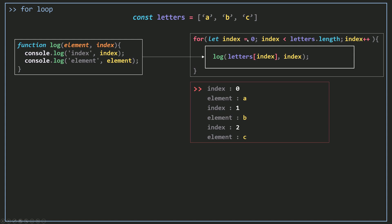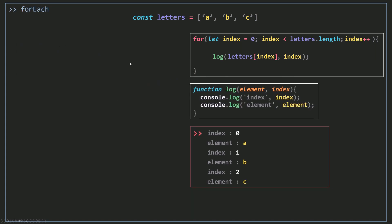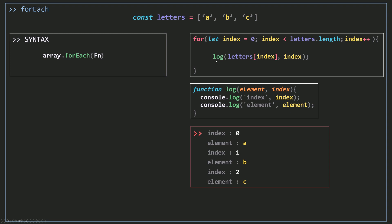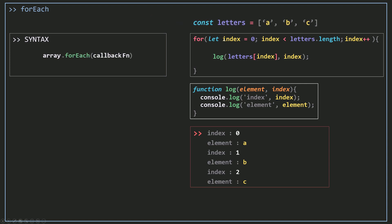The problem with the for loop is that you always need to set the start, tell it where to stop, and also increment the index yourself. With forEach, all you need to do to achieve the same result is call the forEach method on your array. You can see that forEach is just a function, and all you pass in is another function like log — this function is called a callback function.